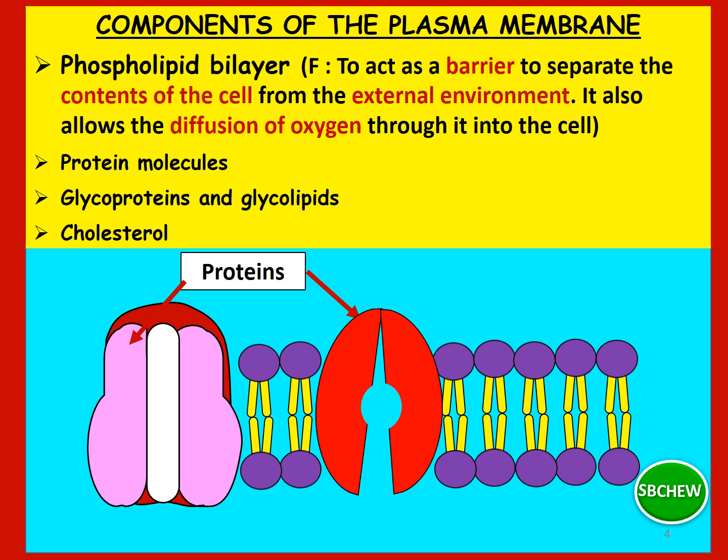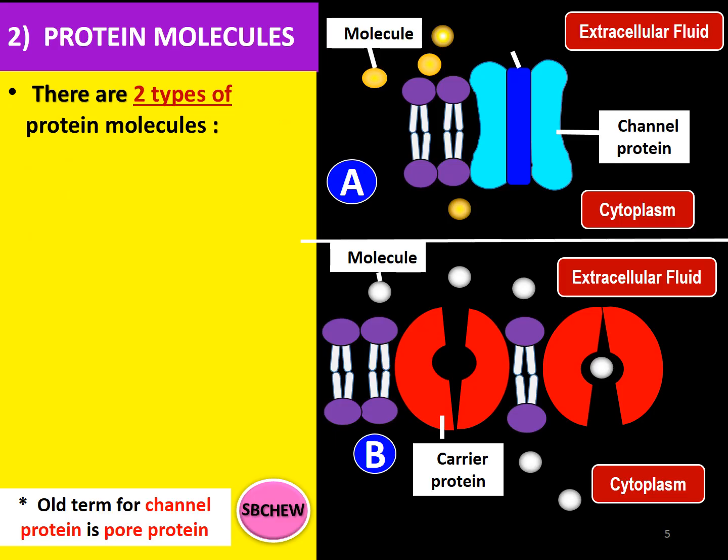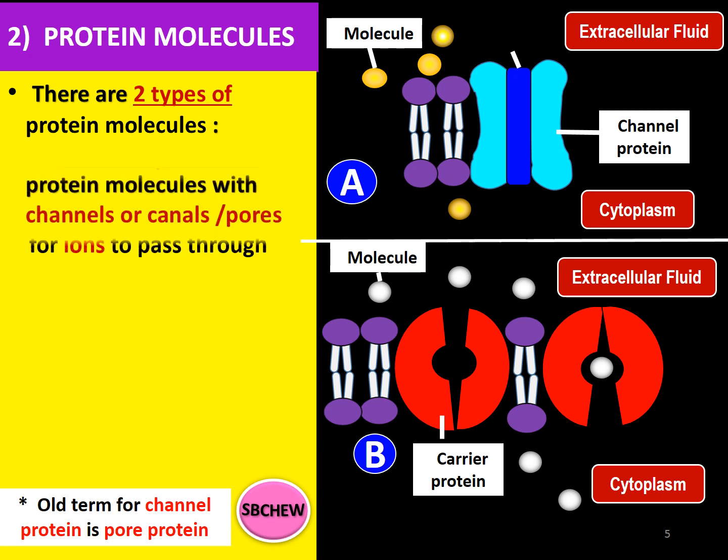Let's go on to the protein molecules. We have finished studying the first component of the plasma membrane, which is the phospholipid molecule. The second component of the plasma membrane are the protein molecules. There are two types: firstly, the channel proteins, and secondly, the carrier proteins.